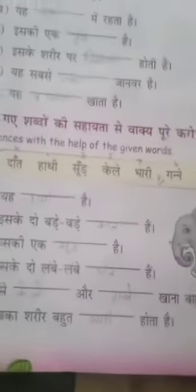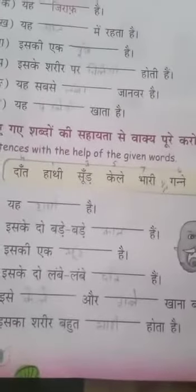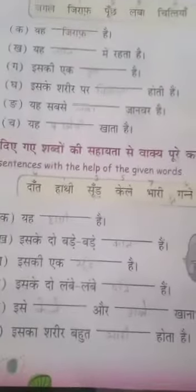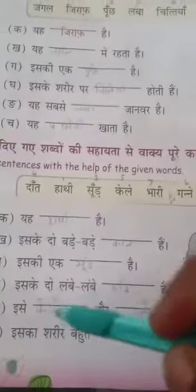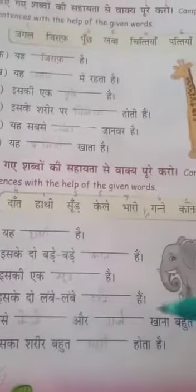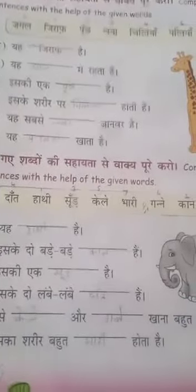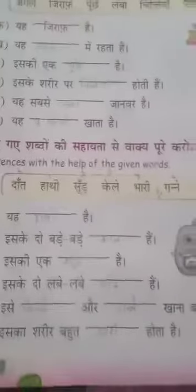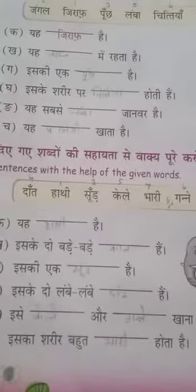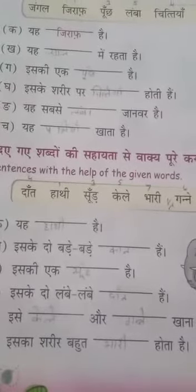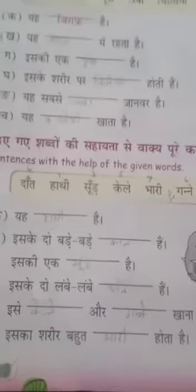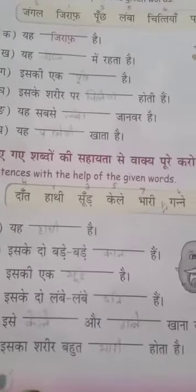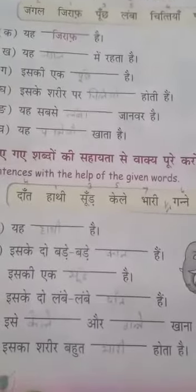Isse kele aur ganne khaana bahut pasand hai — it likes to eat bananas and sugar cane. Iske sharir bahut bhaari hota hai — its body is very, very large. Understood everyone? Thank you.